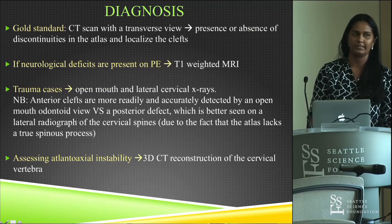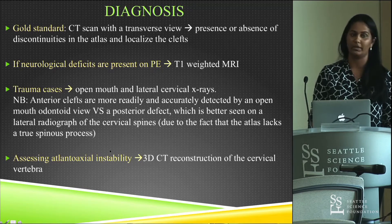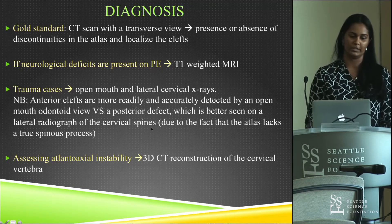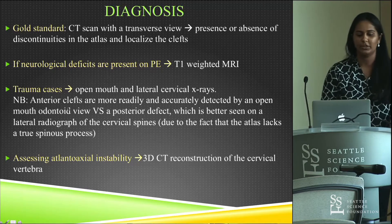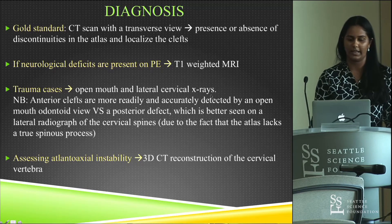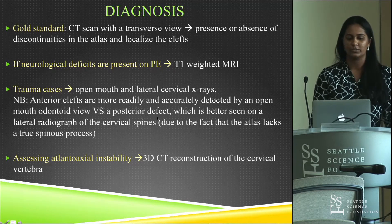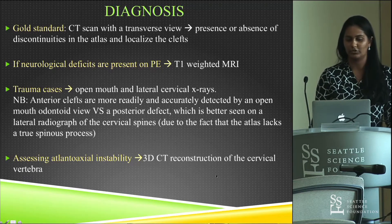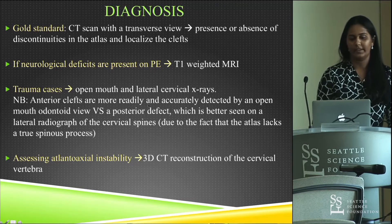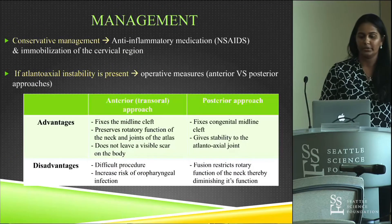Split atlas is typically found incidentally on imaging for acute trauma or cervical neck pain. The gold standard for diagnosis is a CT scan with transverse view. Anterior clefts are more readily detected on an open-mouth odontoid view, while posterior defects are better seen on lateral radiographs. To assess atlantoaxial instability, a 3D CT reconstruction of the cervical vertebrae is used, and if neurological deficits are present on physical exam, a T1-weighted MRI is indicated.